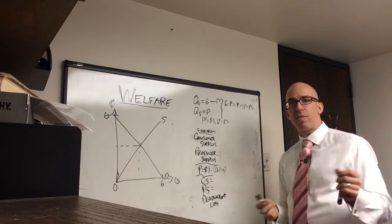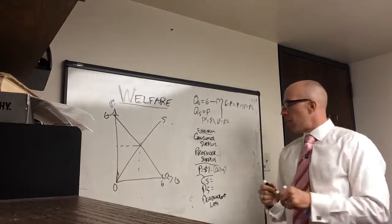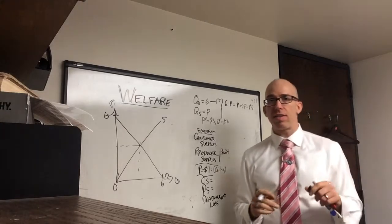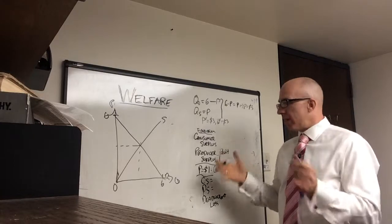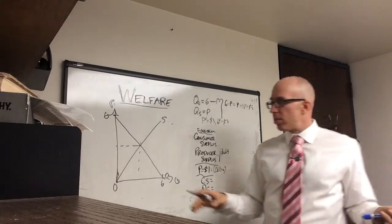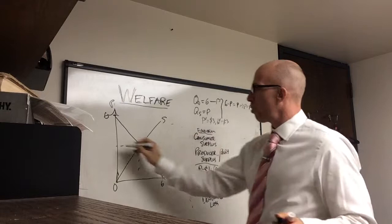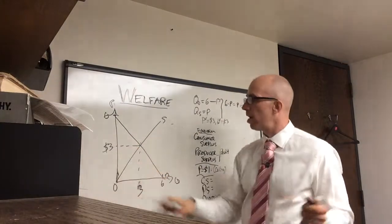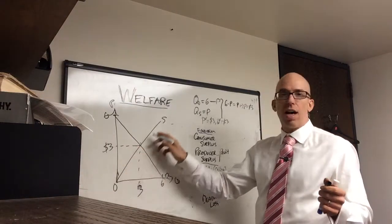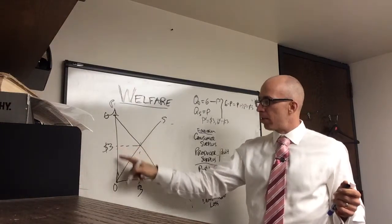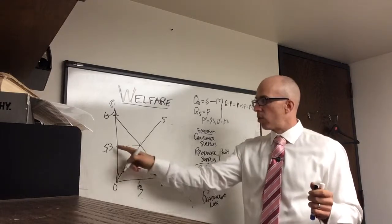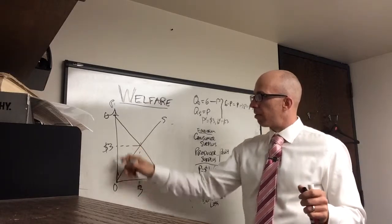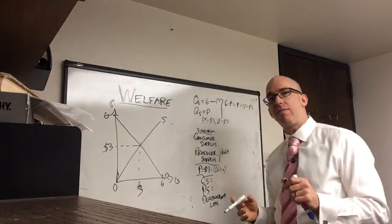Producer surplus is a little bit easier because it goes along with the idea of profit. Producer surplus is profit or revenue minus cost. And so this is a measure of basically what a business operates and earns. And so if you have a price of $3, I'm going to fill this in too, quantity is 3. If you have a price of $3, this is a rising cost curve. And so, for example, this company has zero cost. And so $3 minus zero is $3. So if I can produce a product for free and sell it for $3, that is $3 of profit for me.